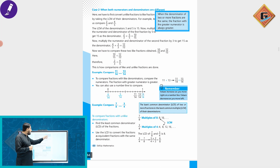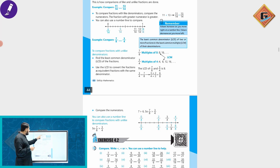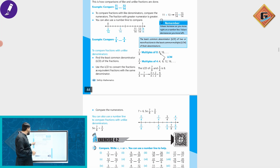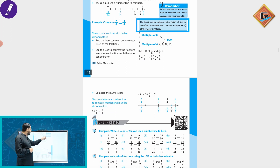The fraction with the greatest numerator is always greater when denominators are the same. As you move right on the number line, the value increases; as you move left, the value decreases. The least common denominator of two or more fractions is the least common multiple of their denominators.